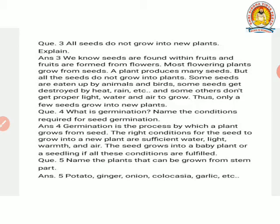Question number four. What is germination? Name the conditions required for seed germination. Germination is the process by which a plant grows from seed. The right conditions for the seed to grow into a new plant are sufficient water, light, warmth and air. The seed grows into a baby plant or seedling if all these conditions are fulfilled.